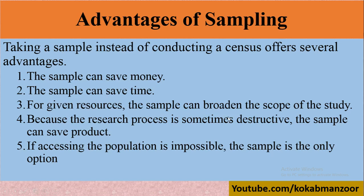Based on that sample, we can also generalize the findings. If 50 or 100 people are doing something, it means the rest of the people will also likely be doing the same thing.